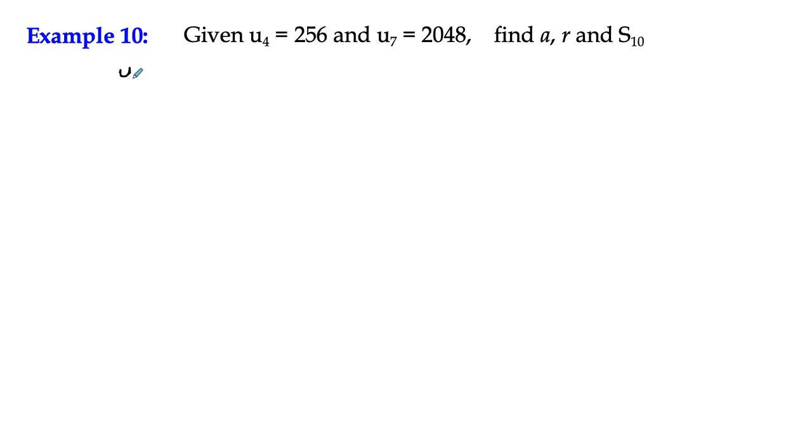If I take U7 and divide it by U4, let's think what that means. U7 has the value of a multiplied by r to the power 6. That's the seventh term according to the nth term rule, ar to the power n minus 1, which means that U4, the fourth term, we can write as a multiplied by r cubed.